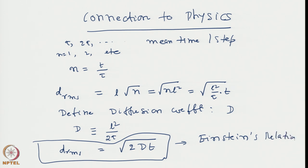If we define D as L squared divided by 2*tau, we get d_rms equal to the square root of 2*D*t, where D is a constant of the system expressed in terms of microscopic parameters — the jump length L and the mean time tau for each jump. In terms of their ratio, we obtain a very famous law discovered by Einstein: the square root law, also called Einstein's relation. So using this law, Einstein proposed that experiments with Brownian particles should look for the rms displacement, not the mean displacement, which is on average 0.